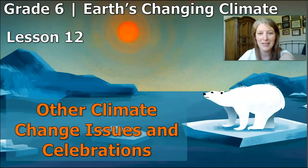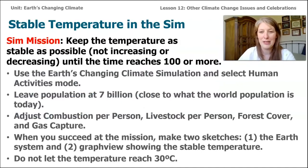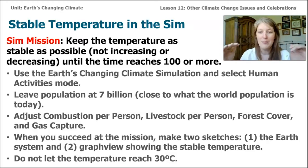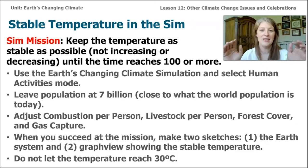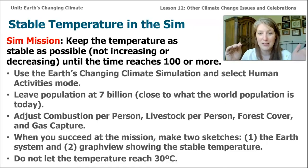Our investigation question for Lesson 12 is: what other climate issues are humans trying to solve? We're going to start with a sim challenge. You're going to go on to Earth's changing climate sim and try to keep the temperature as stable as possible, but with the population of Earth not changing. We have to use all the climate change solutions to figure out how we can have a stable temperature even though our global population stays the same.